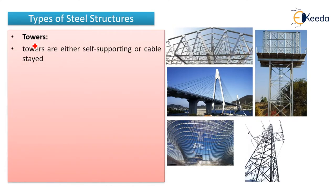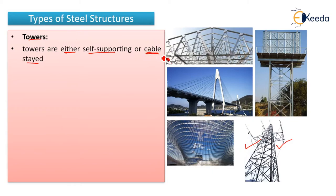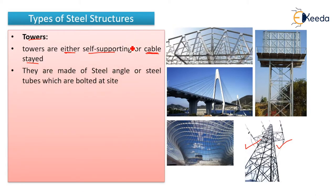The second type of steel structure is towers. They are of two types: self-supporting, which are supported by their own weight, or cable-stayed, where cables are stretched to carry their load. They are made up of steel angles — angle sections that are used for this type of tower.